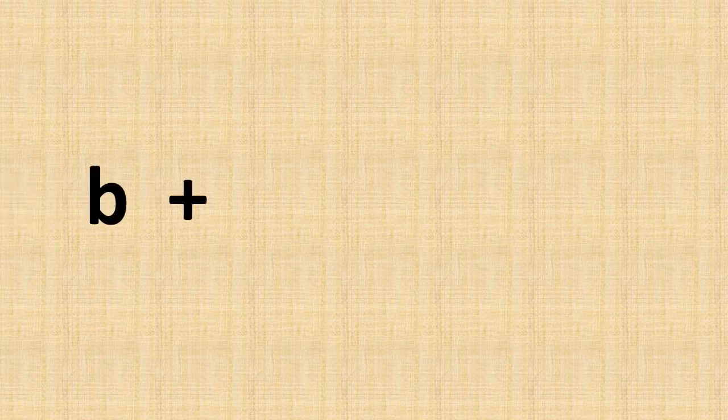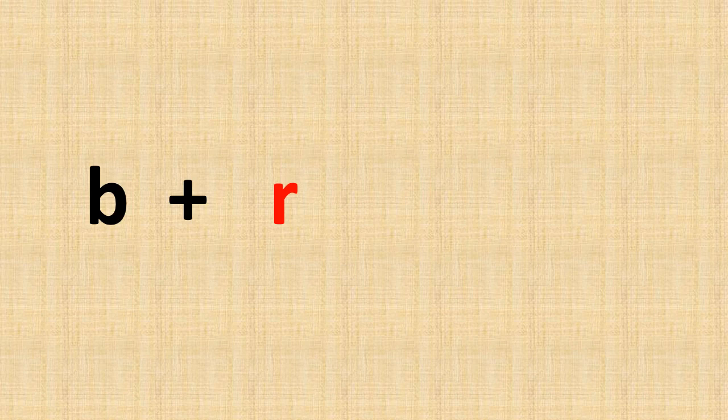Today's topic is blends. Here you can see letter B is given in black color. What is the phonic sound of letter B? B. Very good. And after B, you can see letter R in red. What is the phonic sound of letter R? R. Very good. When we join B and R together, we get a new sound. That is br.